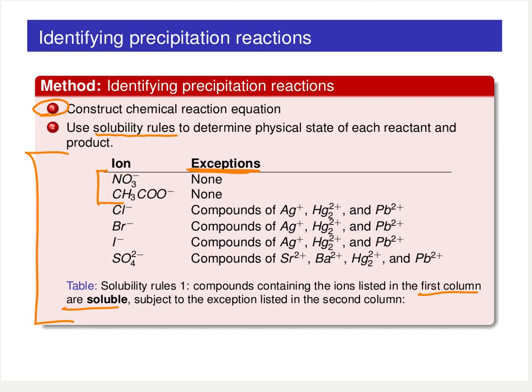Going down to the final four entries, there are a number of exceptions listed. For example, the chloride ion will generally be soluble unless that chloride ion is paired up with either a silver, mercury, or lead ion. The same thing actually happens for all three of the halogens listed — generally the halogens are going to be soluble unless they're paired up with silver, mercury, or lead.